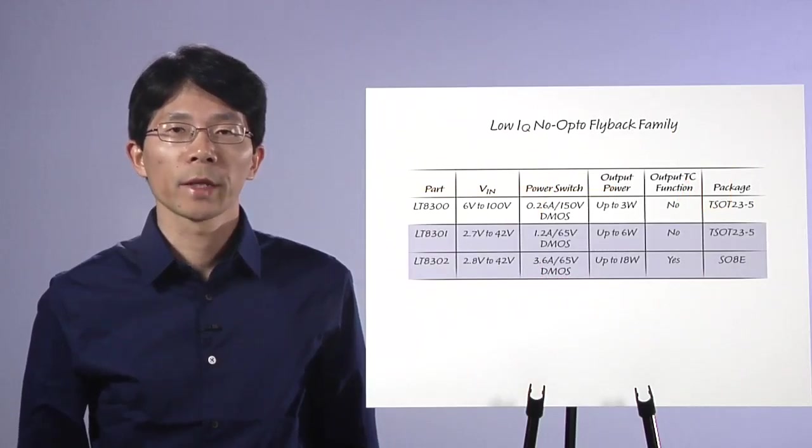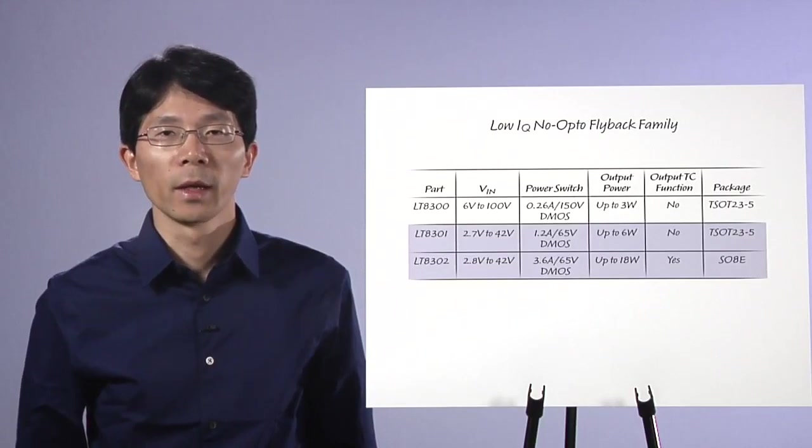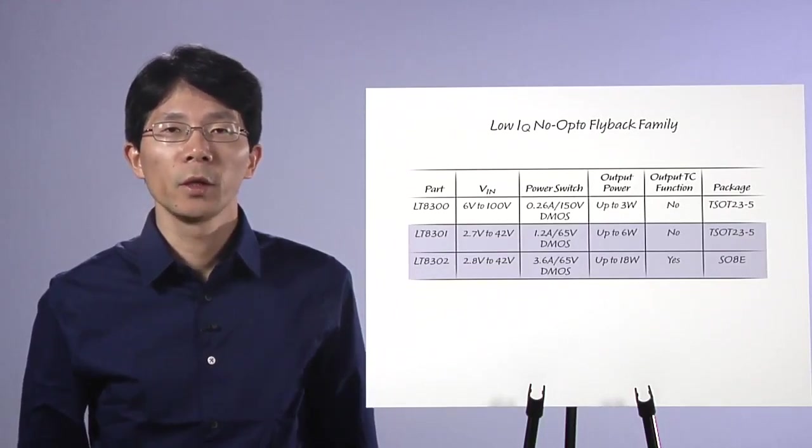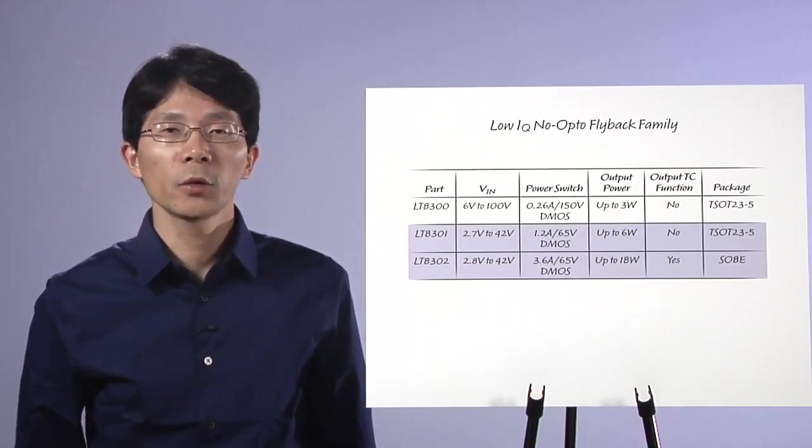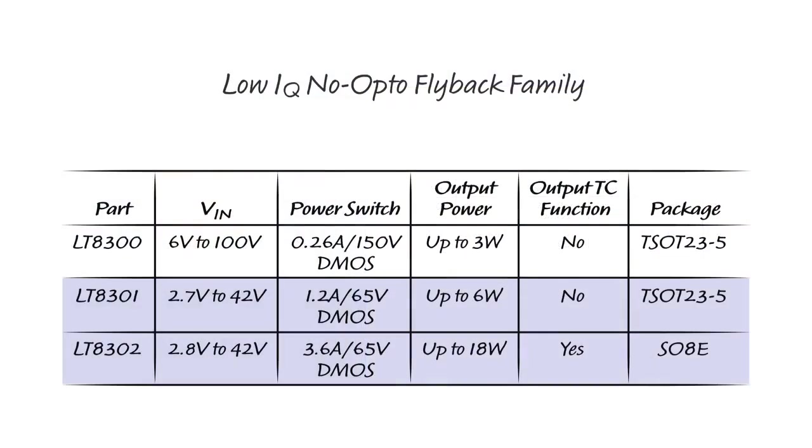This table summarizes our Low IQ No Opto Flyback family, including the recently introduced LT8301 and LT8302, both operating from an input voltage up to 42V. For example, the LT8301 and LT8302 can deliver isolated output power up to 6W and 18W, respectively.